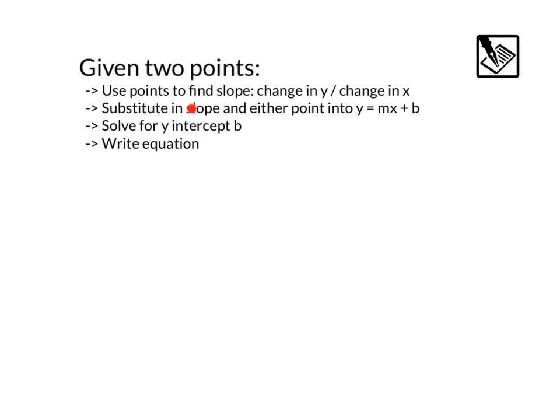When you have two points, use the points to find your slope. That's our change in y over our change in x. That y2 minus y1 over x2 minus x1. Then we can substitute in the slope and either point, it doesn't matter which one, into y equals mx plus b. And it's the same process as the last example. Solve for the y intercept b and write the equation.